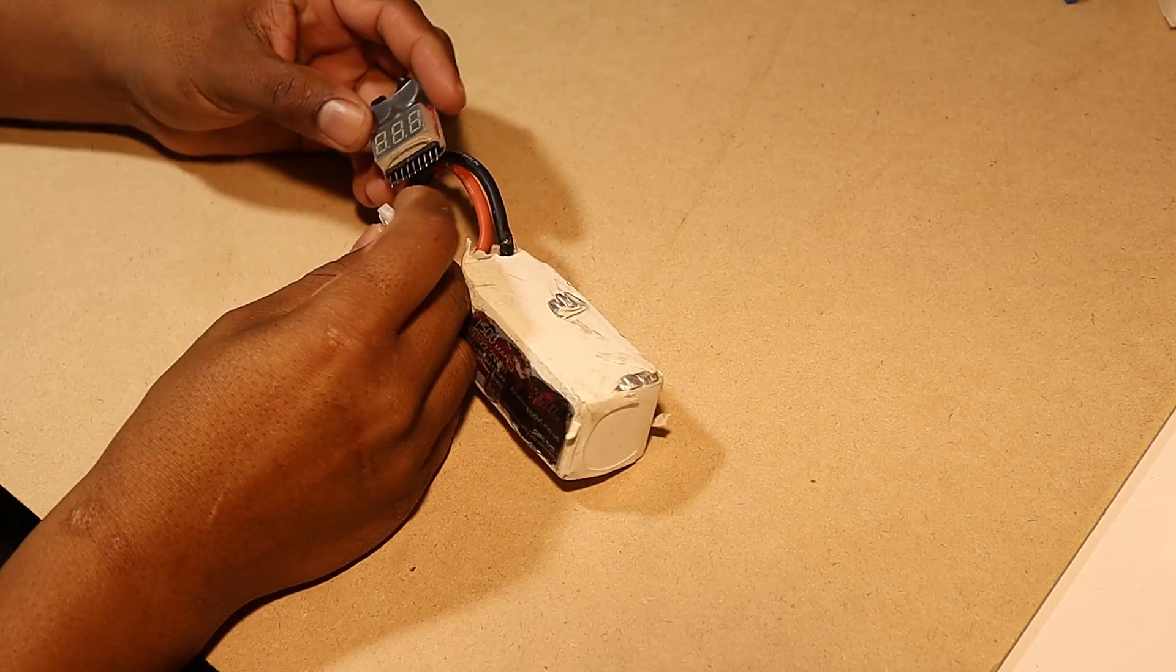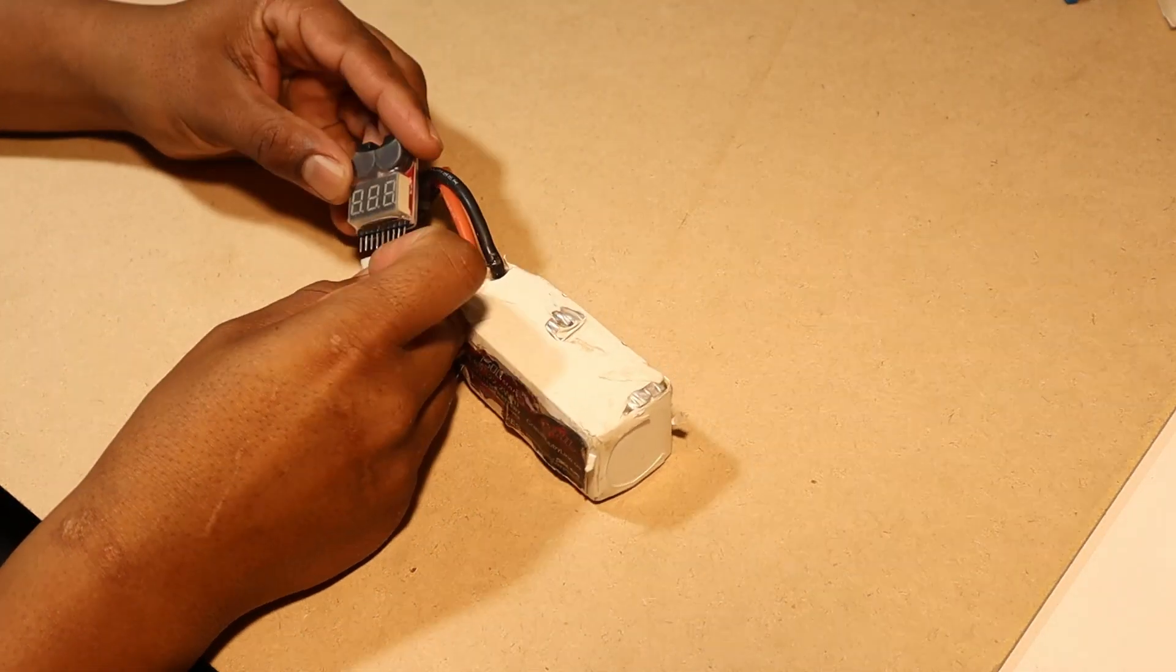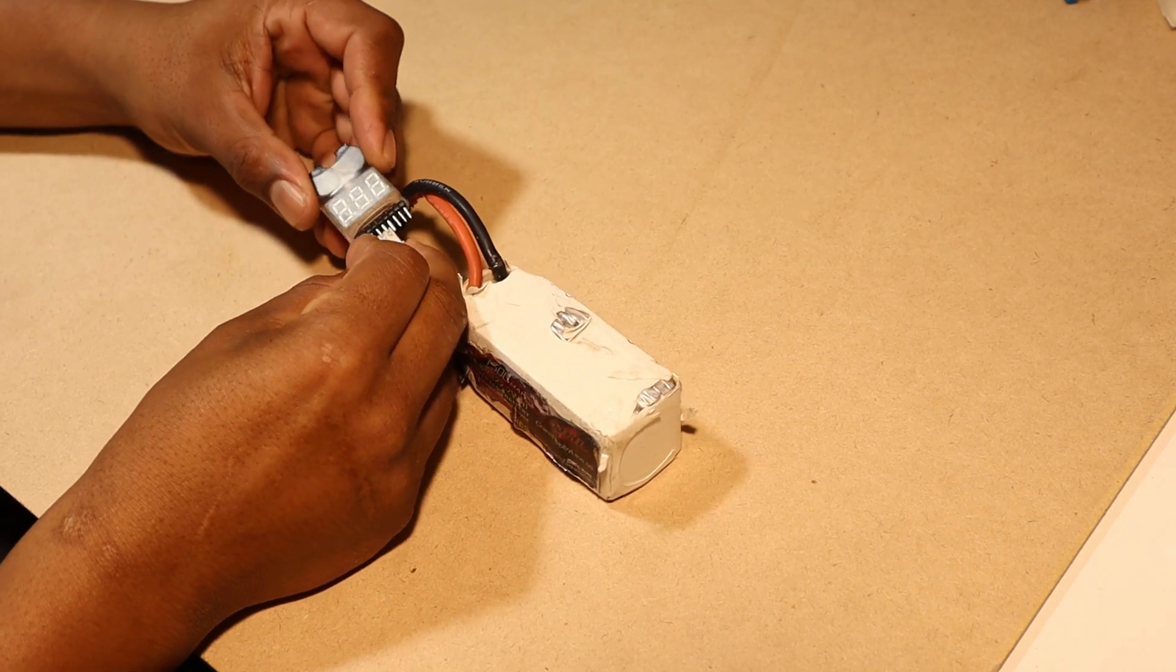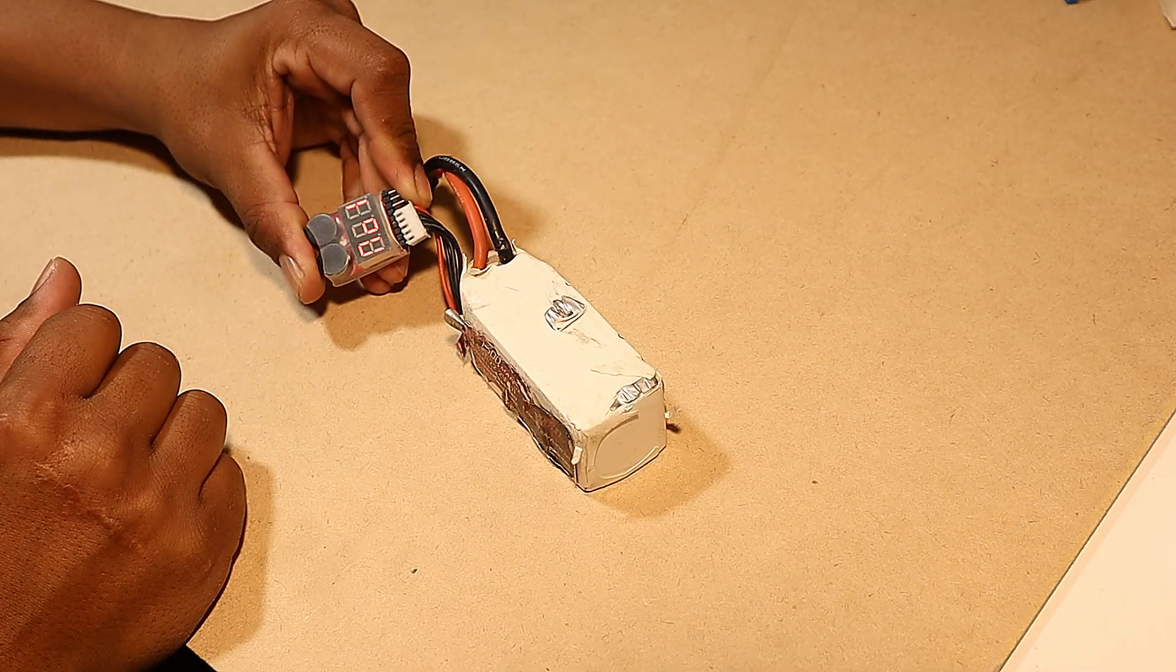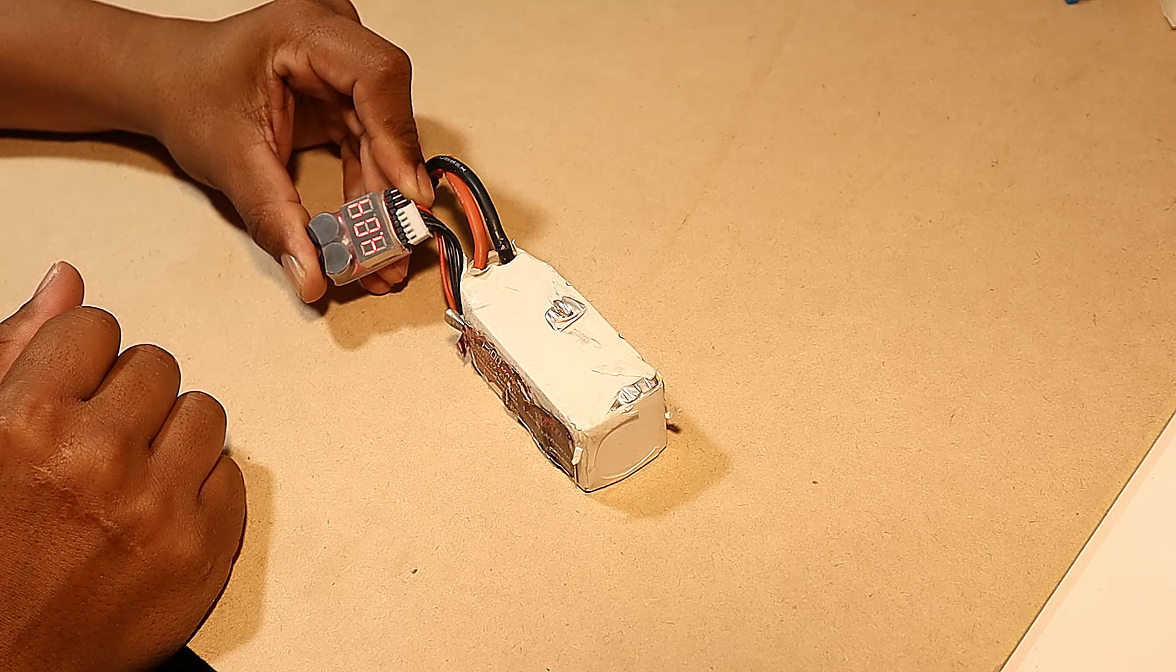So today we have this 4S lipo pack which has one of the cells dead in it. I will show you guys how you can take that dead cell out and make it a 3S lipo. In this case, I am making a 2S lipo because I need a pack for my goggles.